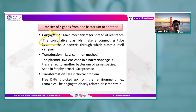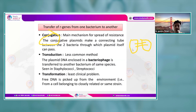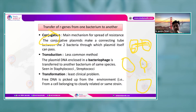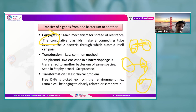In conjugation, two plasmids form a connecting tube and the plasmid is transmitted from one bacterium to another. In transduction, the plasmid DNA is enclosed within a bacteriophage, which carries it from one bacterial species to another. Transformation is the least clinically significant mechanism — free DNA from the environment is picked up directly by the bacterium.